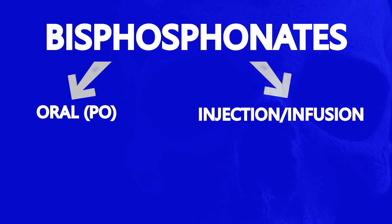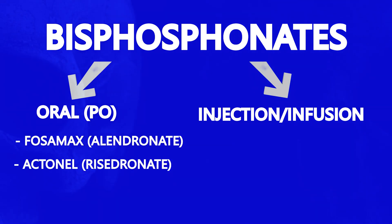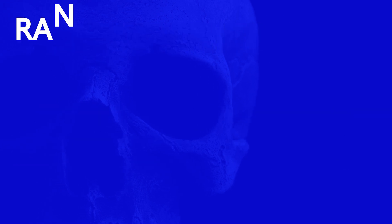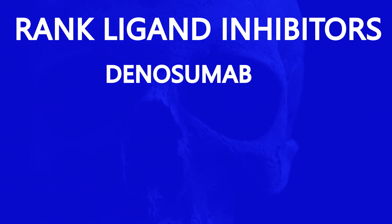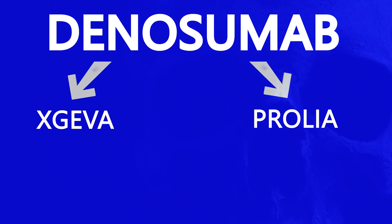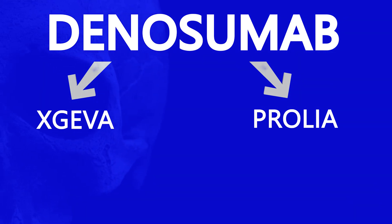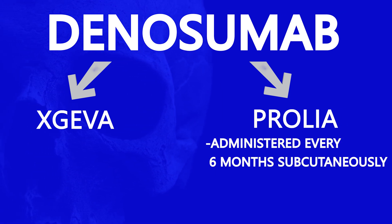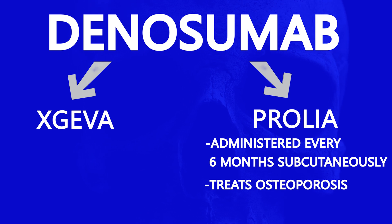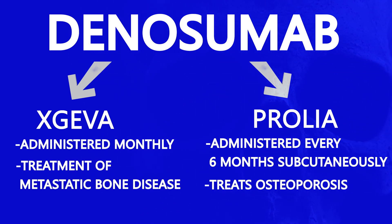The most common oral bisphosphonates are Fosamax and Actonel, and the most common parenteral bisphosphonates are Reclast and Boniva. The RANK ligand inhibitor prescribed frequently is Denosumab, which has two brand names: Xgeva and Prolia. They are the exact same medication but have different indications and treatment protocols. Denosumab as Prolia is administered every six months subcutaneously and significantly reduces vertebral, nonvertebral, and hip fractures in osteoporotic patients. Denosumab as Xgeva is administered monthly for cancer patients with metastatic bone disease.